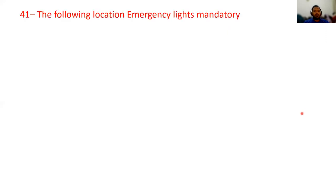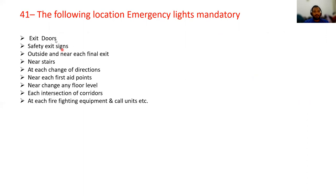Emergency lights are mandatory in the following locations: exit doors, safety exit signs, outside near each final exit, near stairs, at each change of direction, near each first aid point, near any change in floor level, at each intersection of corridors, at each firefighting equipment location, and at call units.